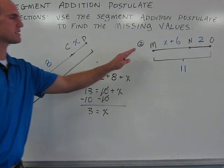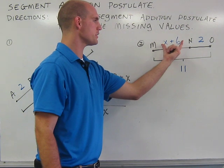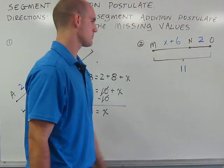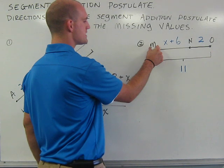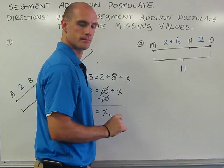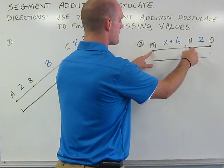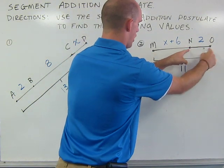In the next example, we have a little bit more complex, in that we have an expression as one of the segments. We still know that the entire segment MO is equal to 11, and that MO can be found by adding up MN and NO.